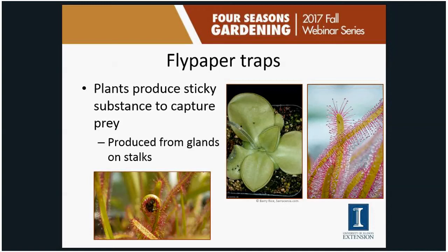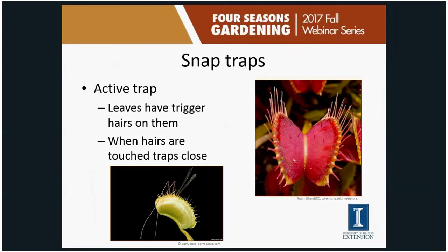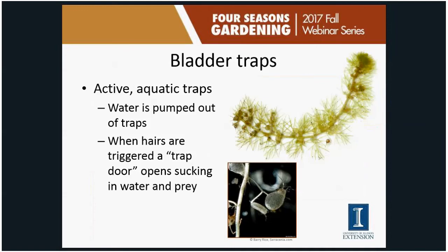Snap traps are active traps. Plants like the Venus flytrap have two lobes with trigger hairs. When insects walk across and trigger those hairs, the trap closes on them. As the insect struggles, the plant starts releasing digestive enzymes. After several days, the trap opens back up and only the dead husk of the insect remains, ready to catch more.